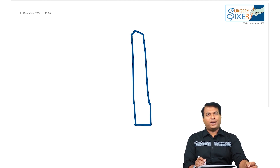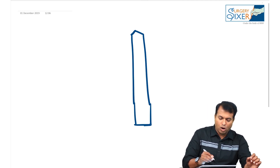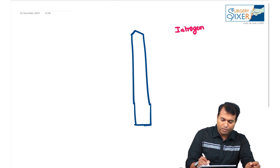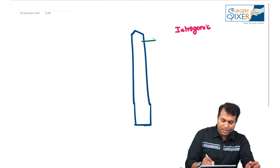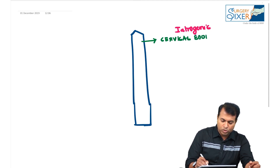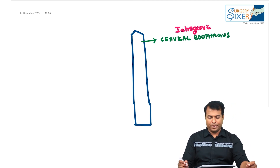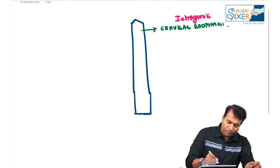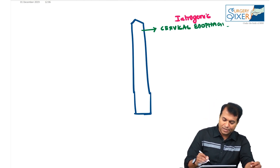In the esophagus, what is the most common cause of perforation? The most common cause of perforation is iatrogenic — putting in an endoscopy. The most common site of perforation is in the cervical esophagus. While putting in the endoscopy, we injure the cervical esophagus.